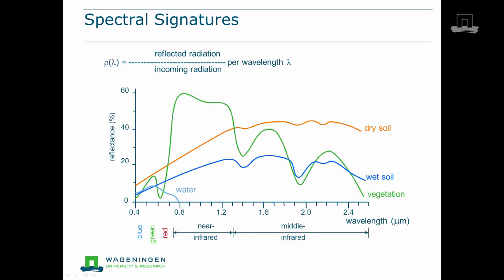In the clip on spectral signatures, the signatures of different soils and vegetation objects on earth are explained. Soil showed a gradual increase in reflectance from the visible to the infrared. Vegetation has a low reflectance in the visible but a very strong reflectance in the near infrared. In contrast, water has quite a low reflectance — still significant in the visible, but in the near infrared and middle infrared it may be considered zero.